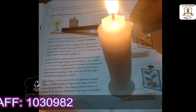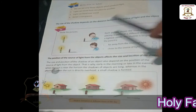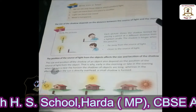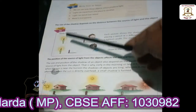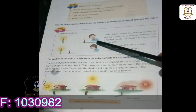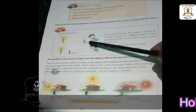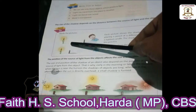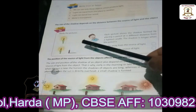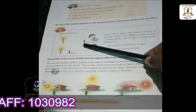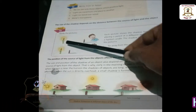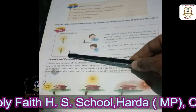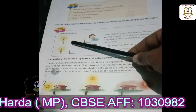The size of the shadow depends on the distance between the source of light and the object. Each picture shows the shadow formed by placing a pencil at different distances from the lighted candle. The shadow is longer when the pencil is far away from the source of light.